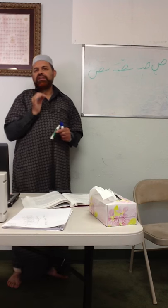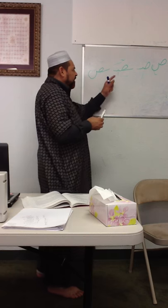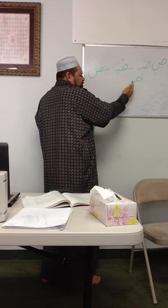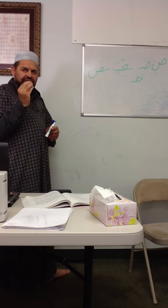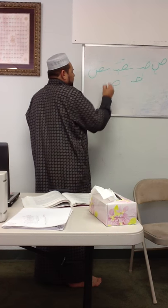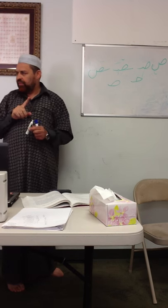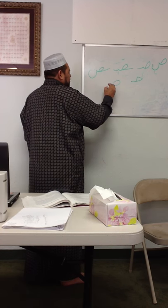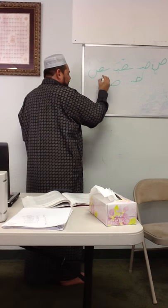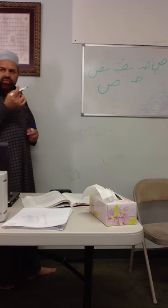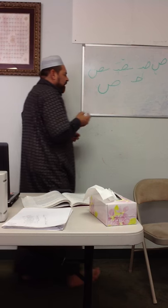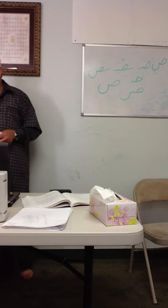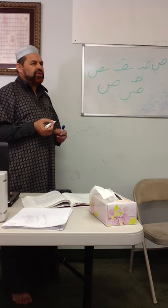A common mistake people make when writing sod is making the shape pointed, which is wrong. The correct shape of sod is always oval. So remember: sod must have an oval shape. The second thing to remember is that it must have a hook or tooth after the oval shape in the independent sod. Writing it without the hook or tooth is also wrong. These two points are important to remember about writing sod.